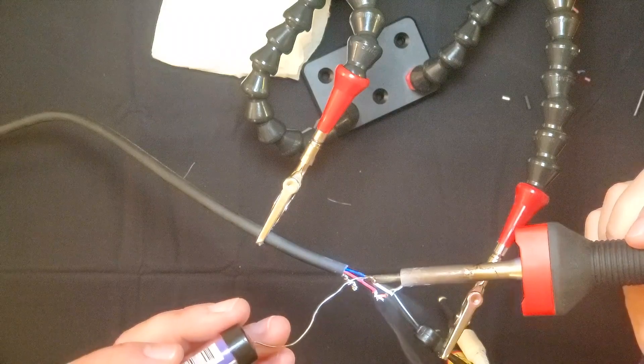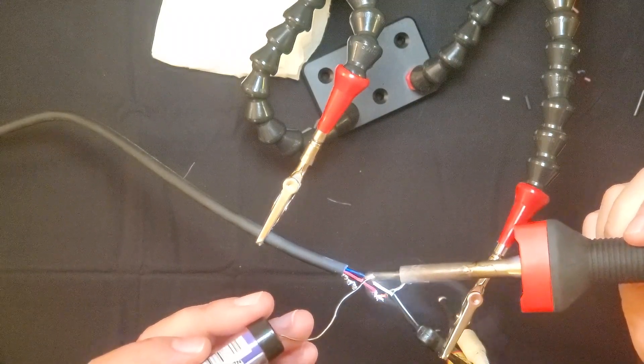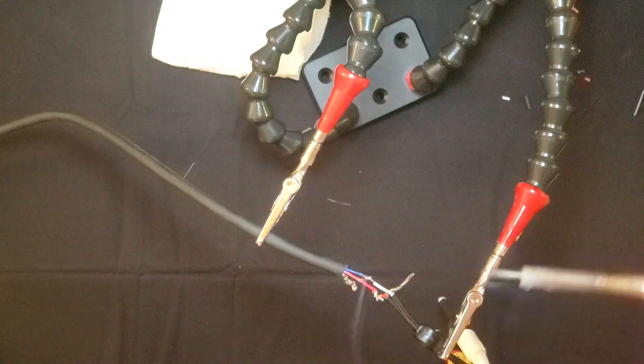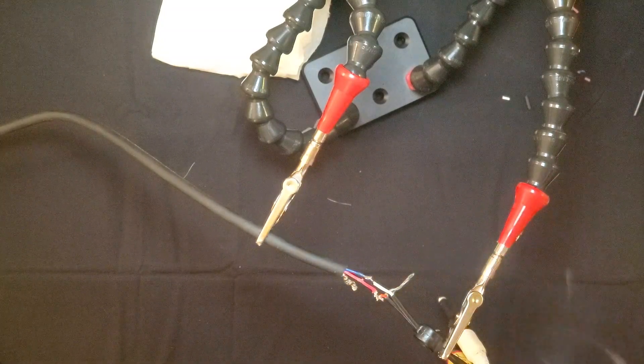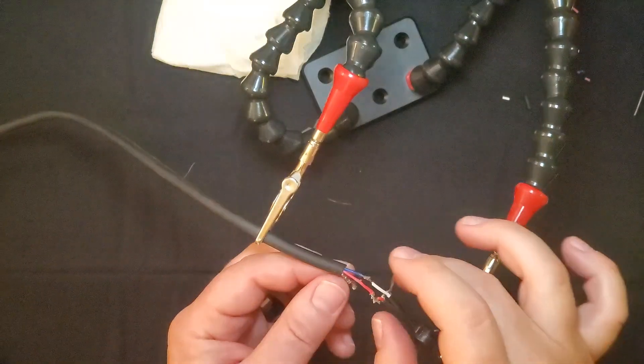And here you can see how staggering the connections means that none of the conductive areas can touch. The connection on the red wire is a good way away from the connection on the white wire.